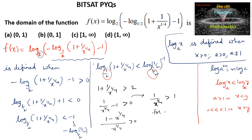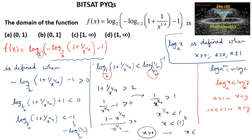For any real number, x^(1/4) less than 1 means x is less than 1^4, which equals 1. Also, x must be positive for the expression to be defined. Therefore x must be greater than 0 and less than 1. So the domain of the function is the open interval (0, 1), and 1 cannot be included.